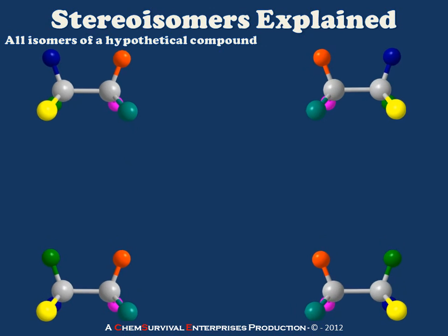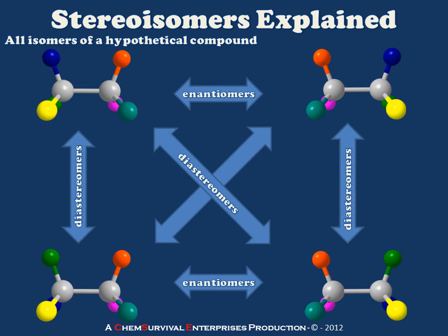In our previous case we were fortunate to have a meso compound, which simplified our relationships. Now I'd like to show you a grid of all the relationships available in a compound with two distinct chiral centers, rather than two equal chiral centers. Because we can't combine the two molecules at the bottom to form a single meso compound, they are in fact enantiomers of one another, and we arrive at a set of relationships where each molecule is an enantiomer of one other and a diastereomer of two others. Take time to look at these carefully, identify which chiral centers are in play, and you should be ready to do some serious analysis of real organic molecules.